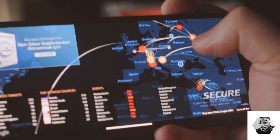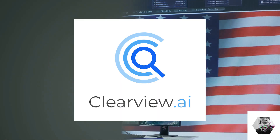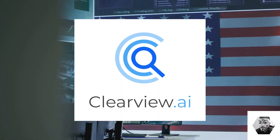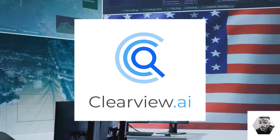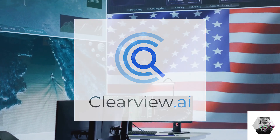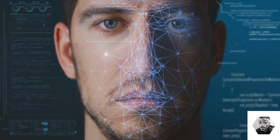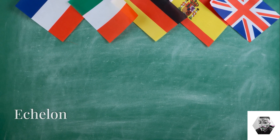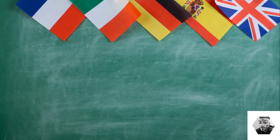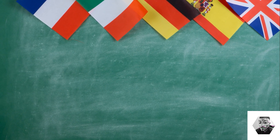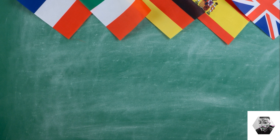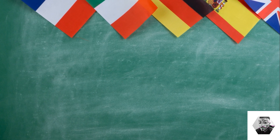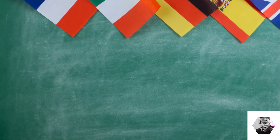Global Commercial Tools. Clearview AI, from the USA, is a controversial facial recognition tool used by law enforcement and private agencies, scraping billions of images from the web. Echelon, from the Five Eyes Alliance, is a global signals intelligence collection system used collaboratively by the US, UK, Canada, Australia, and New Zealand.